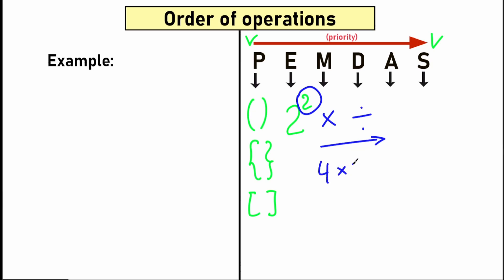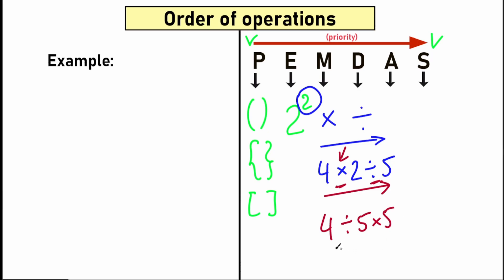For example, if we have 4 times 2 divided by 5, we have multiplication and division. We scan from left to right: the first sign is multiplication, so we multiply 4 times 2 first. But if instead we had 4 divided by 5 times 2, then the first sign is division, so we divide first. Whatever operation comes first from left to right is performed first. Multiplication and division form one common group with the same priority.